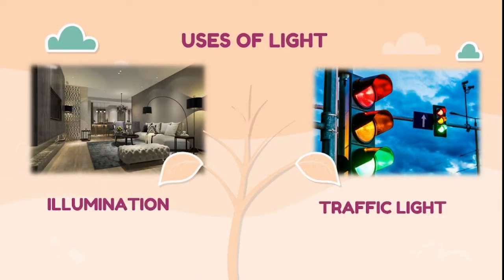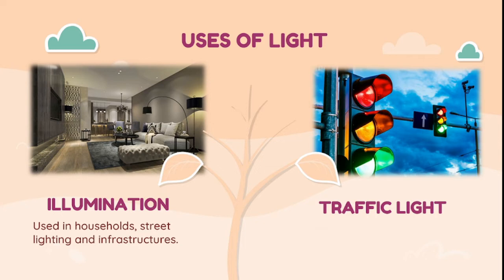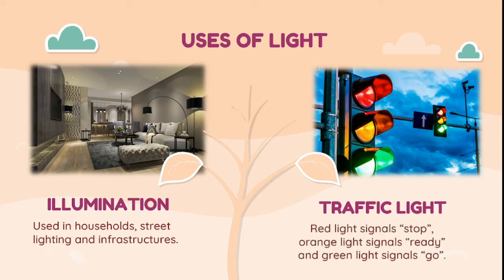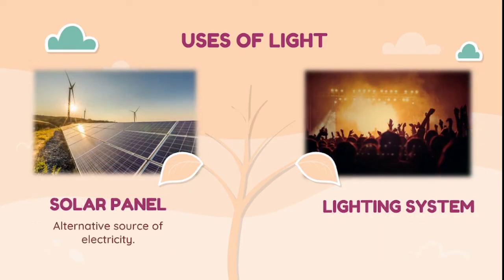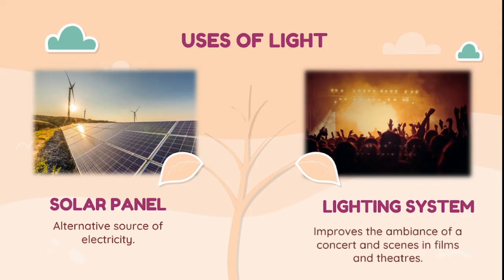These are the uses of light when it comes to illumination inside households, streets, and infrastructures. Visible light is also applied in traffic lights, where red signals stop, orange signals ready, and green signals go. A solar panel is an alternative source of electricity, and lighting systems improve the ambience of concerts and scenes in films and theaters.